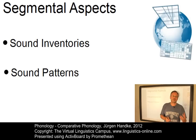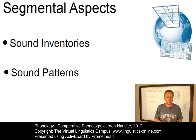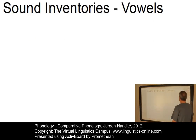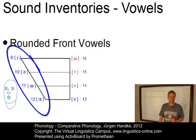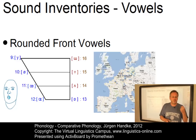Let us start with some segmental properties, especially with those that are more representative than others, since they allow us to classify languages in a more systematic way. For example, all languages have vowels, and all languages also have unrounded front vowels, very similar to vowels such as E or A. But not all languages have rounded front vowels.